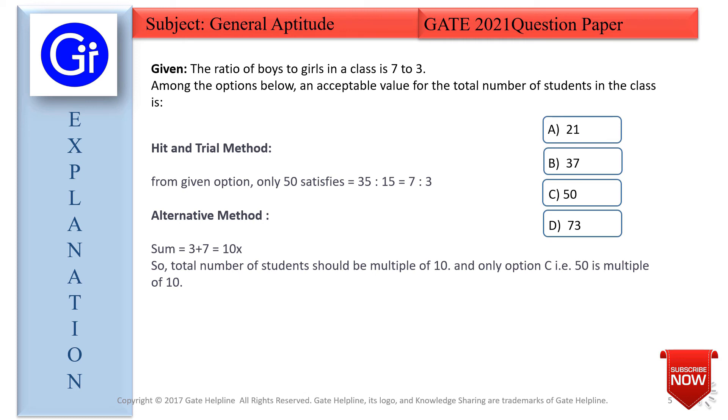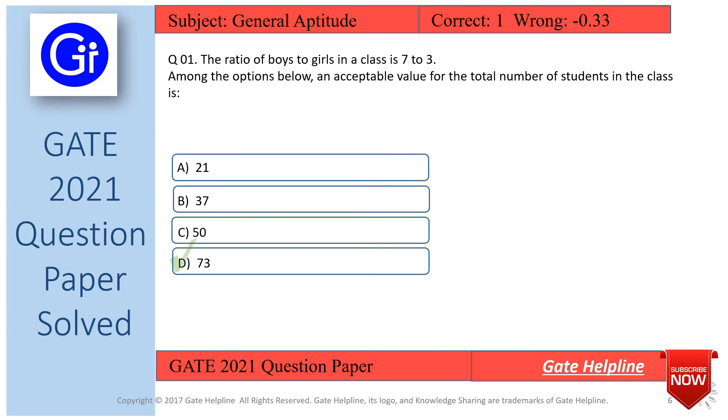Using this method, the total number of students in the class is 50. Friends, the answer to this question is option C. 50 is the acceptable value for the total number of students in the class.